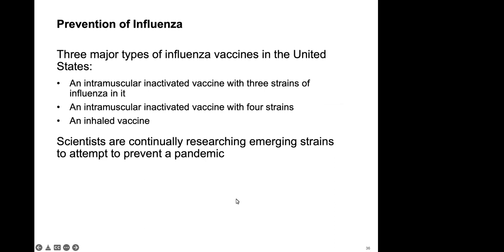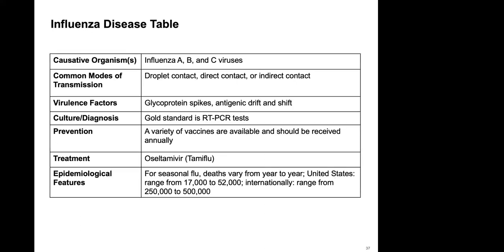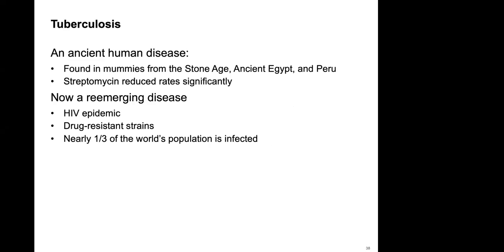Keep in mind that flu vaccines developed early in the year are educated guesses, and some years have very good efficacy while others do not. In the US we typically see about 17,000 to 52,000 deaths per year from flu, mainly in the very young and very old — especially the elderly population.